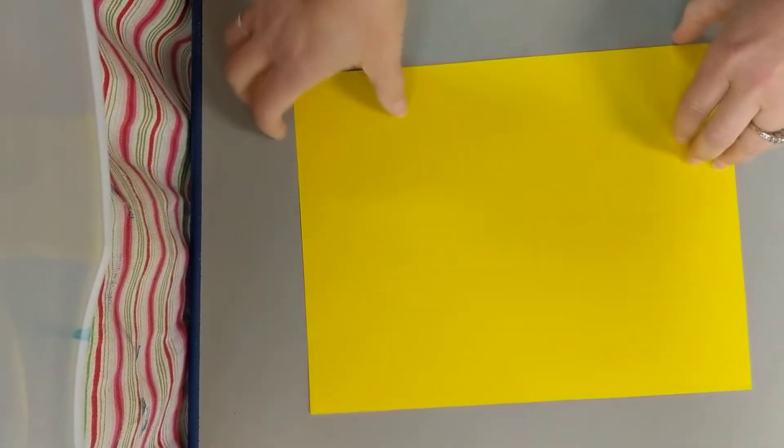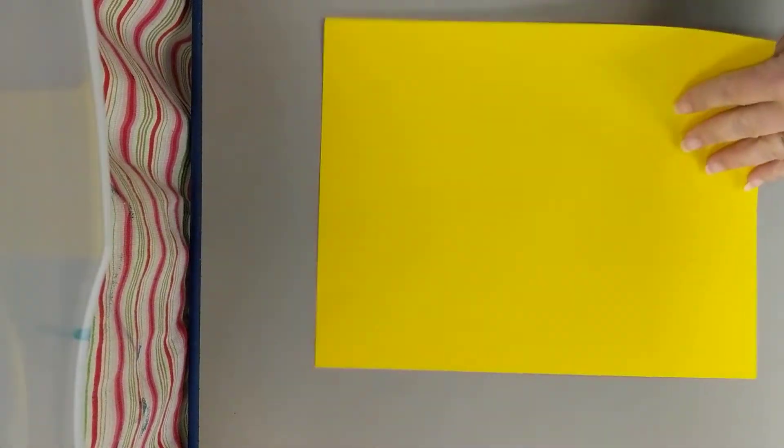First, you want to color your picture. This is my picture - I actually haven't colored it, but you could color both sides or one side. Then you take it and fold it in half.